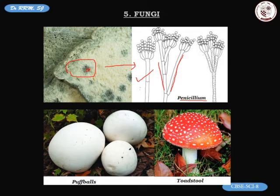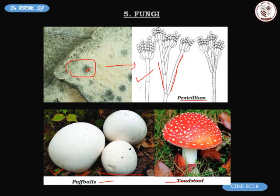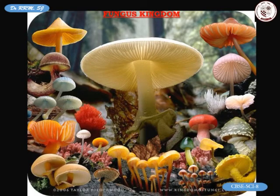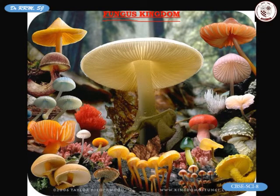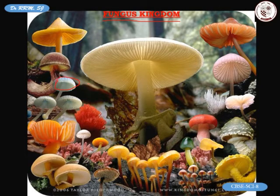Other fungi examples in your textbook include puffballs, commonly found in open grasslands during the rainy season, and toadstools, found in forests and grasslands. It is good to remember these two names. Here is a beautiful image of the fungus kingdom showing many varieties — the umbrella-shaped structures are called the fruiting bodies of fungi.